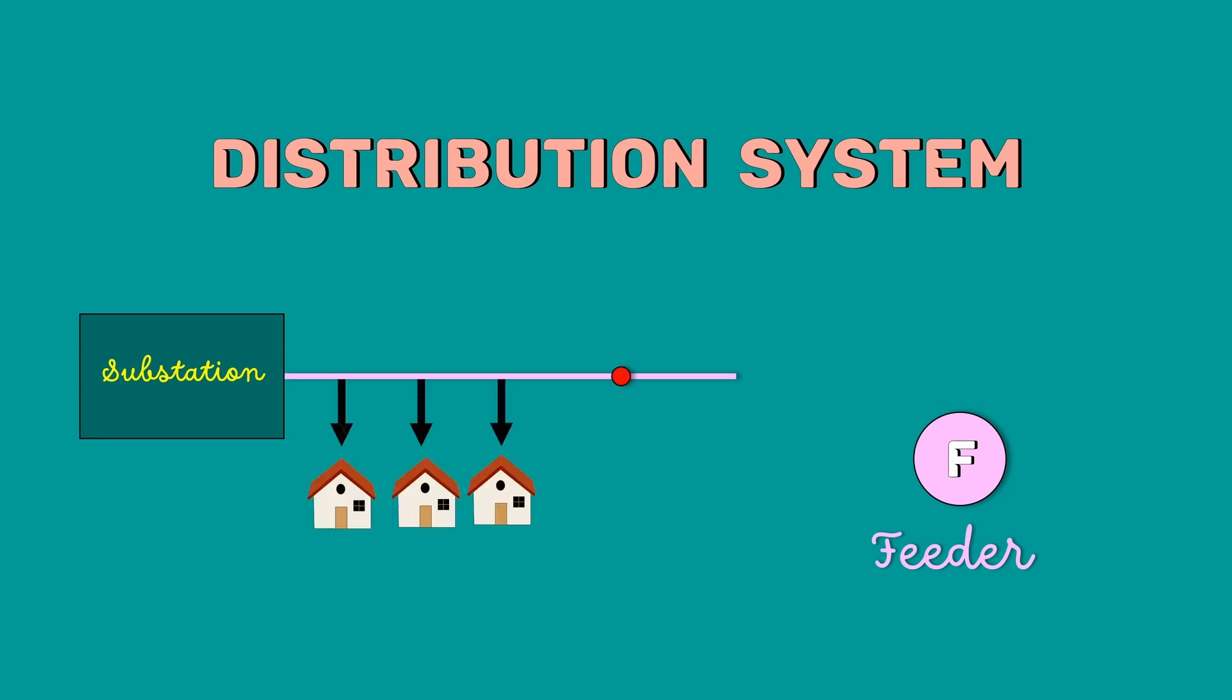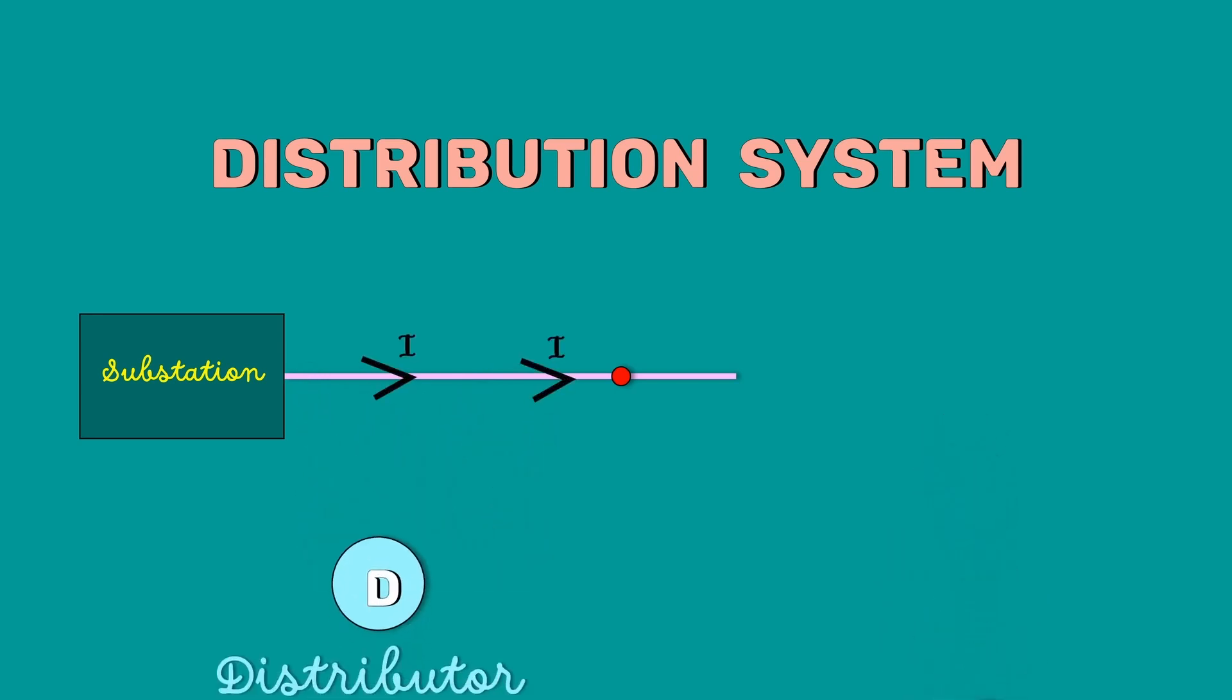The distribution system consists of feeders and distributors. The feeder connects the substation to the area where the power is to be distributed. Generally, no tappings are taken from the feeder so that the current in it remains the same. The tappings are taken from the distributor for supply to consumers.